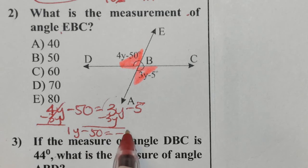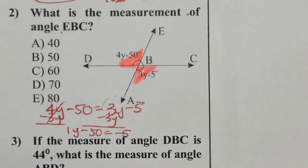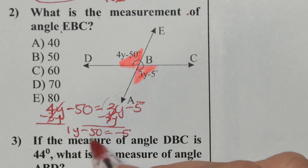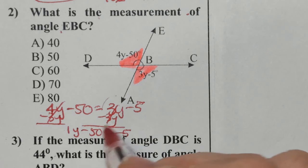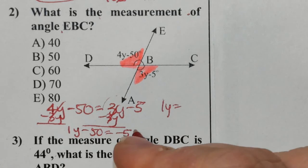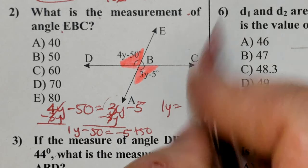1y subtract 50 equals negative 5. And then I'm going to take the quantity of negative 50 and move it over. When it moves over, it changes sign, so then 50 becomes a positive 50 on the right-hand side.